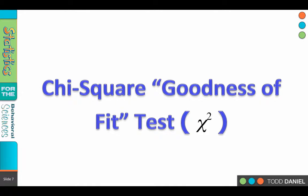The nonparametric test that we are going to learn about is a great all-around, easy-to-use, very flexible test called the chi-square goodness-of-fit test. Now the letter chi looks like a letter X, although it is the Greek letter chi, and the chi-square is pronounced chi, not chi.